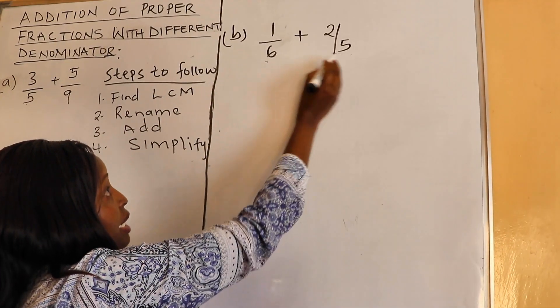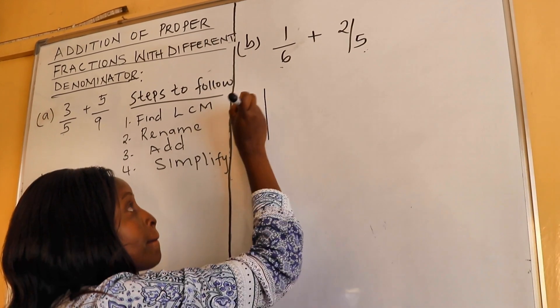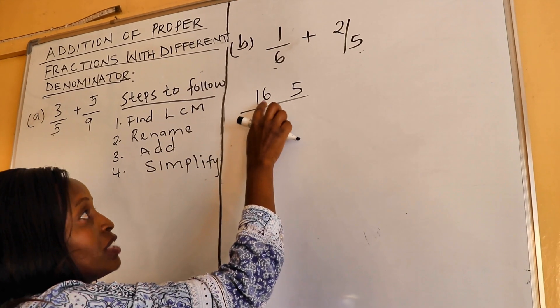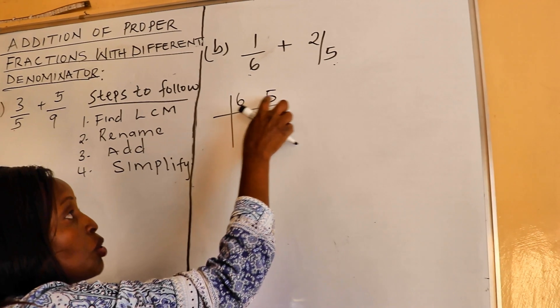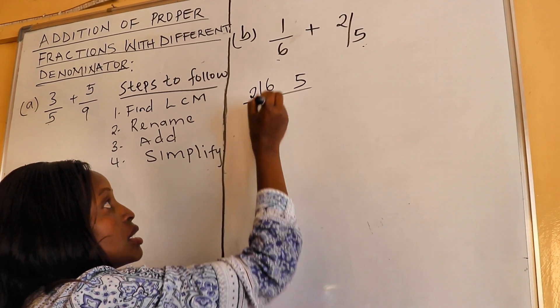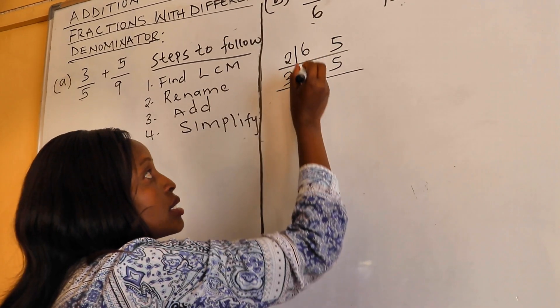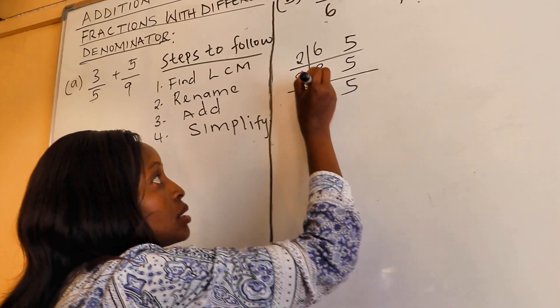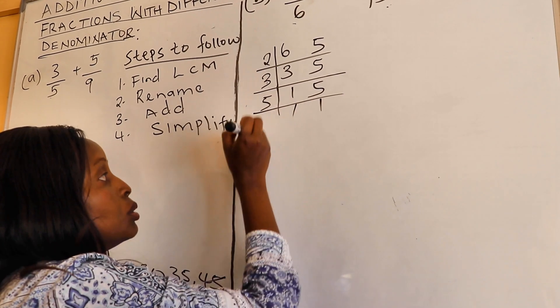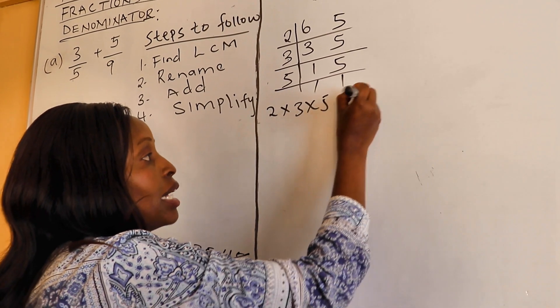The LCM of 6 and 5. We can apply the two methods. So, this table for getting the LCM. We look for a common divisor between 6 and 5. And because 5 is a prime number, they don't have a common divisor. So, let's try 2. 2 times 3 is 6. And our 5 remains. Then we have 3 here. 3 times 1 is 3. And our 5 remains. Then, you take 5 outside here and you remain with 1, 1. So, 2 times 3 times 5. 2 times 3 is 6. 6 times 5 is 30.